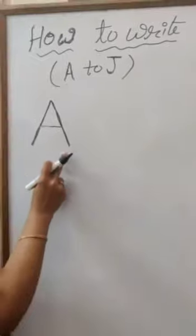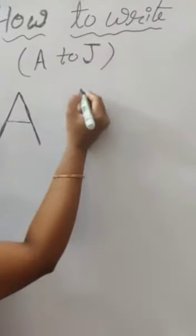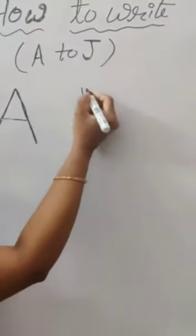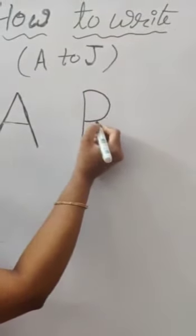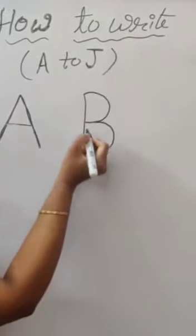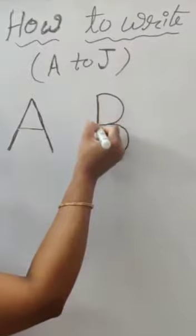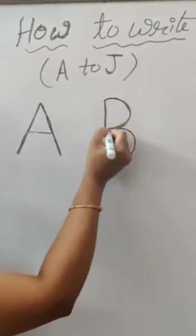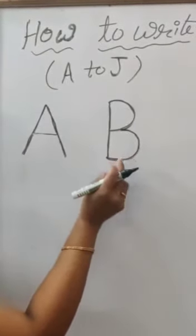A for apple, and one more half circle which makes A. B: straight line, one half circle and one more half circle — which makes B.